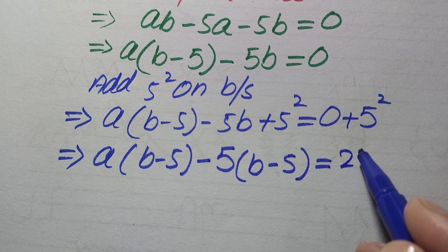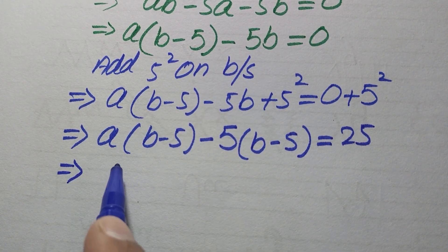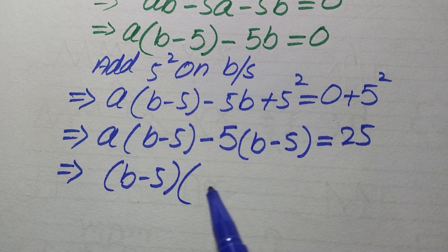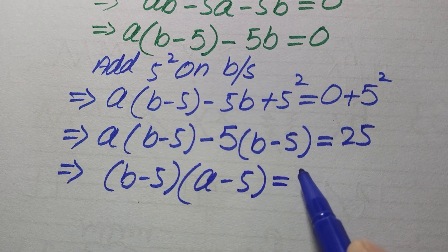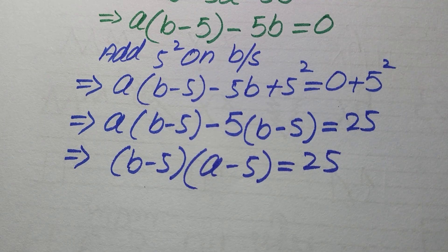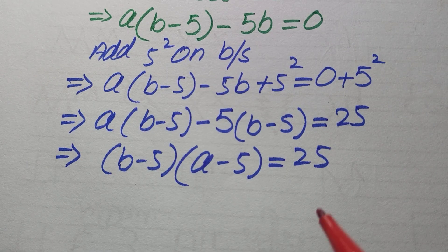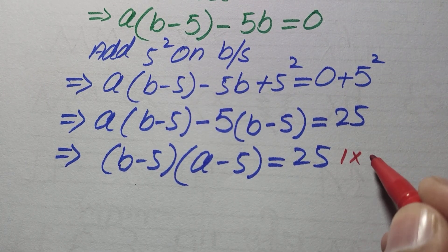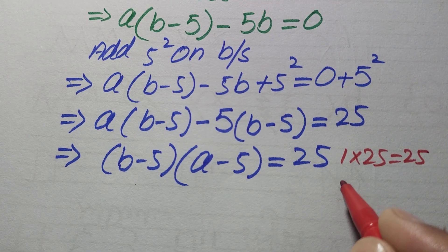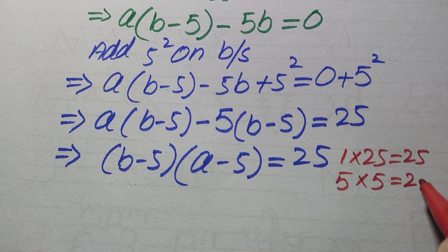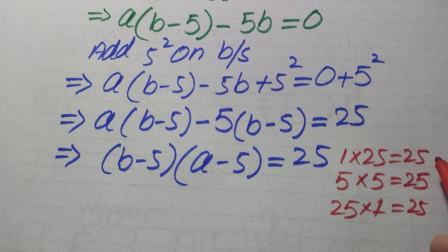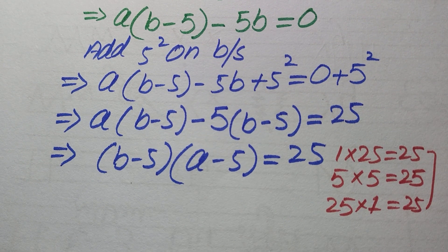Since 5² = 25, and both terms on the left share (b−5), we factor to get (b−5)(a−5) = 25. Now we need two pairs of positive integers whose product is 25. These are: 1×25 = 25, 5×5 = 25, and 25×1 = 25. So we have three cases to consider.